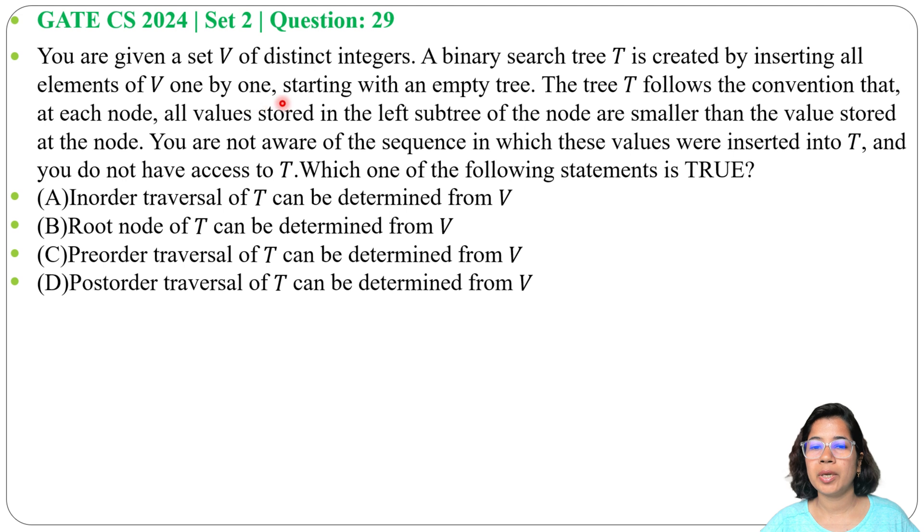Starting with an empty tree, the tree T follows the convention that at each node, all values stored in the left subtree of the node are smaller than the values stored at the node. And you are not aware of the sequence in which these values were inserted into T. And if you do not have access to T,